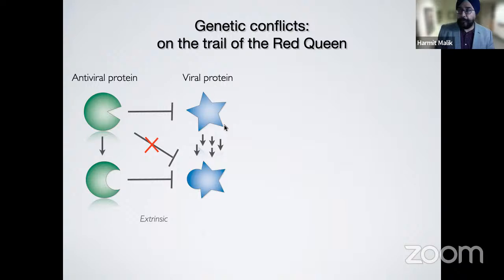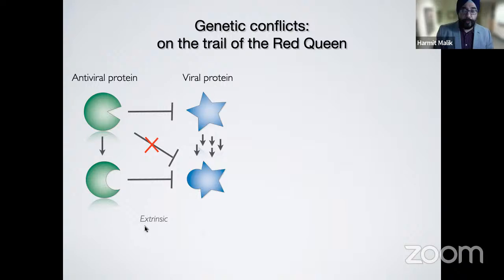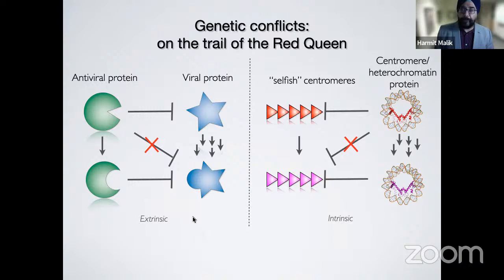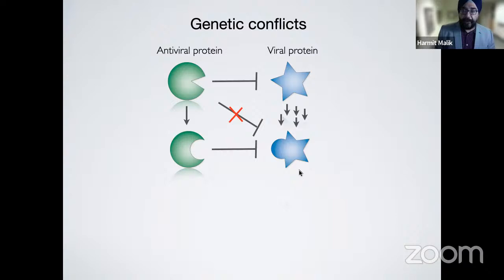Labs like mine take a molecular approach to this ecology-based idea, looking for conflicts like those between leopard and hare populations and attributing them to what occurs between host antiviral proteins and viral proteins trying to infect the host. We refer to these as extrinsic conflicts. In this cartoon example, the host antiviral protein is recognizing some feature of the incoming virus and mediating antiviral action. In response, the virus evolves rapidly away from this interaction, rescuing itself — meaning the virus is temporarily winning this arms race.